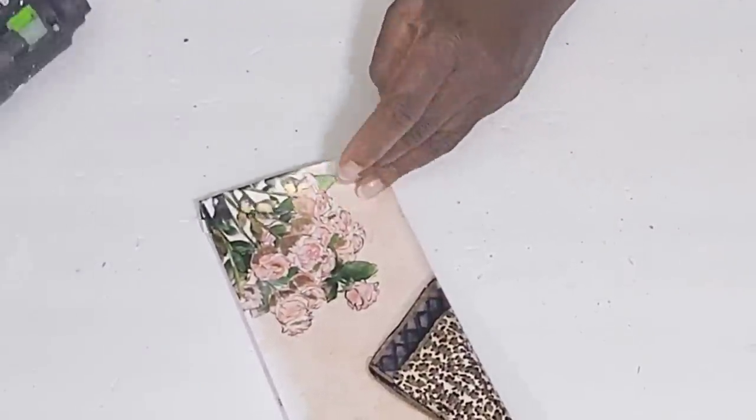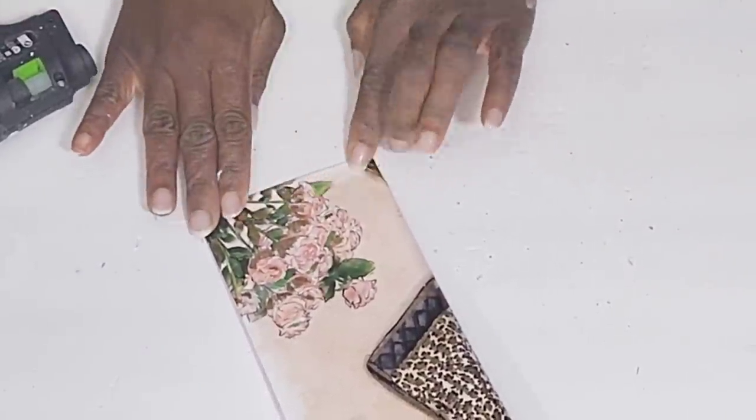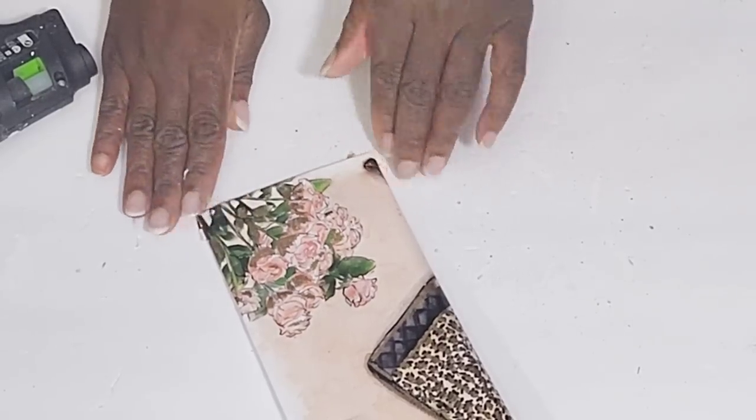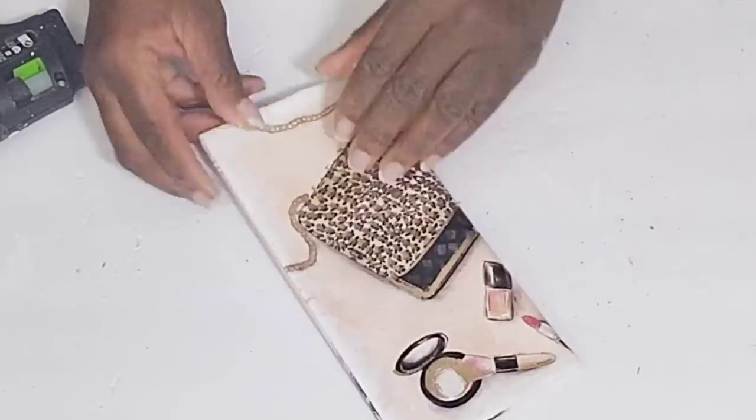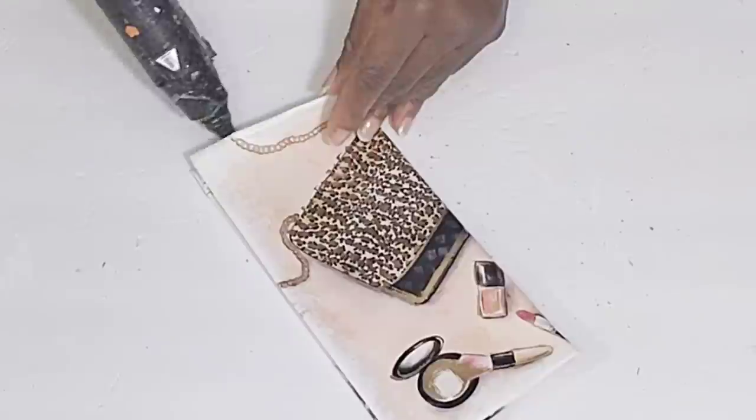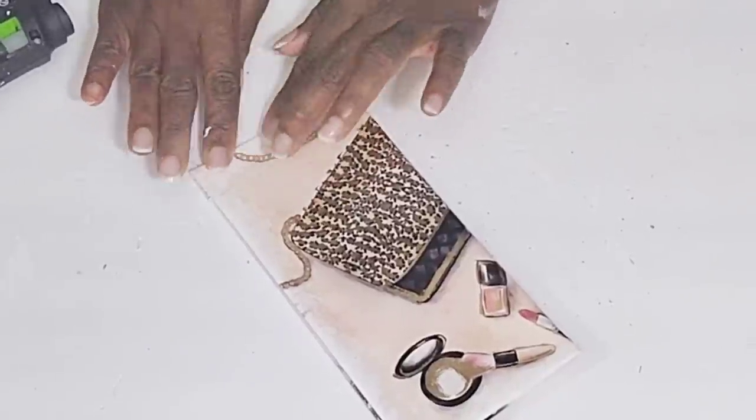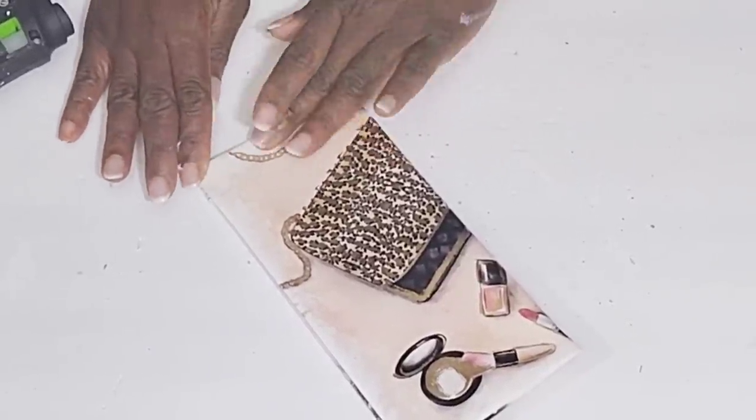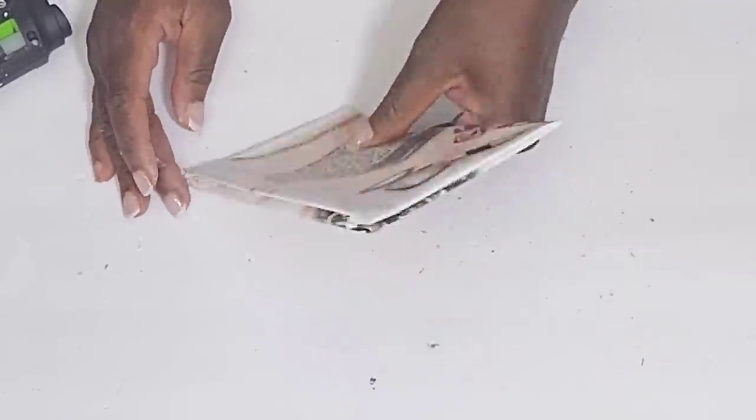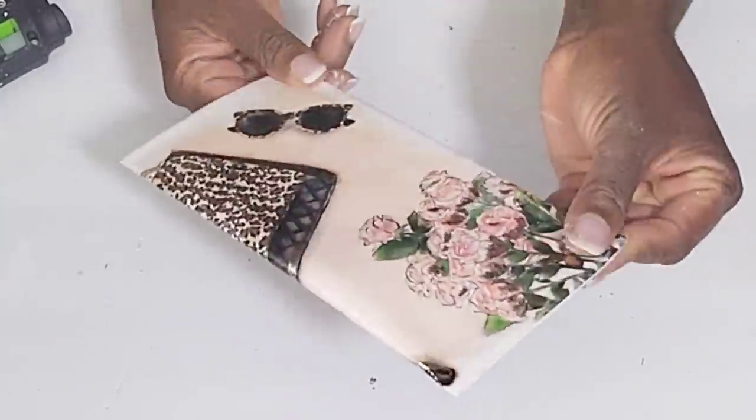So this can be a really cute pouch to hold your sunglasses. And definitely since it has a cute little sunglass image on there, you can hold some things. You can actually take some Velcro and add it along the opening parts so this can close. I think this is so pretty.